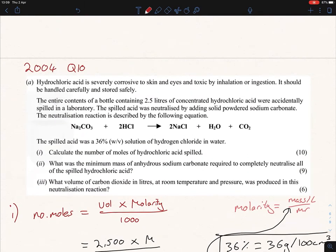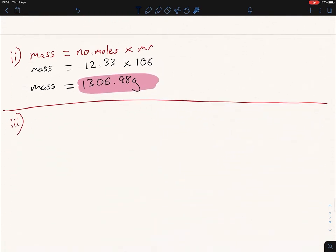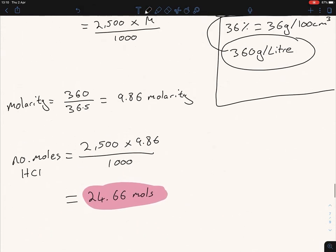Now the last part reads: what volume of CO2 in liters at room temperature and pressure was produced? Same thing again guys - as soon as I see liters and room temperature and pressure and volume, I'm just thinking of one formula. The volume equals our number of moles times, now if it's room temperature and pressure, 24 liters.